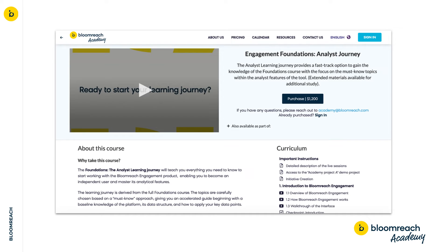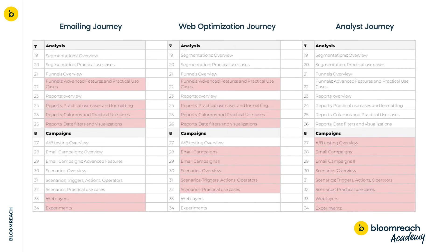Additionally, we have our emailing and web optimization journeys, which both serve their own niche. Purchasing the learning journeys course means that you still have access to all the other learning journeys and live sessions. It simply makes it easier to navigate the course and save a bunch of time. Each learning journey saves around 8 to 10 topics in comparison to the full course and contains the same multimedia approach, including checkpoints, quizzes, and practical exercises, so don't hesitate to explore your options.